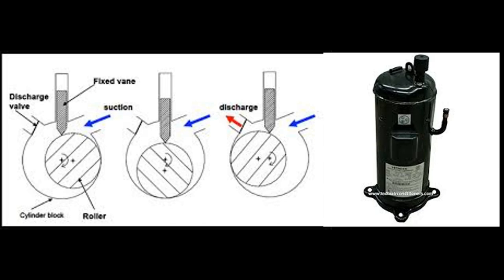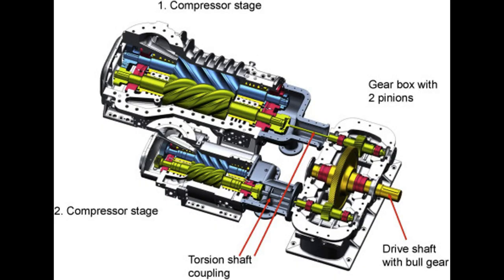The screw compressor uses a pair of helical rotors that trap and compress gas as the rotors revolve in the cylinder. In HVAC, screw compressors are usually used in systems with 20-ton capacity and above. The male rotor and female rotor are built inside the cylinder. Low pressure refrigerant enters one end of the compressor, and the resultant high pressure refrigerant is discharged from the opposite end to the condenser.